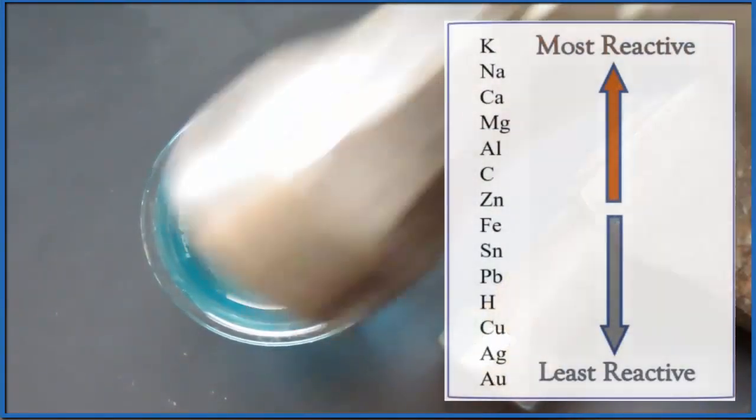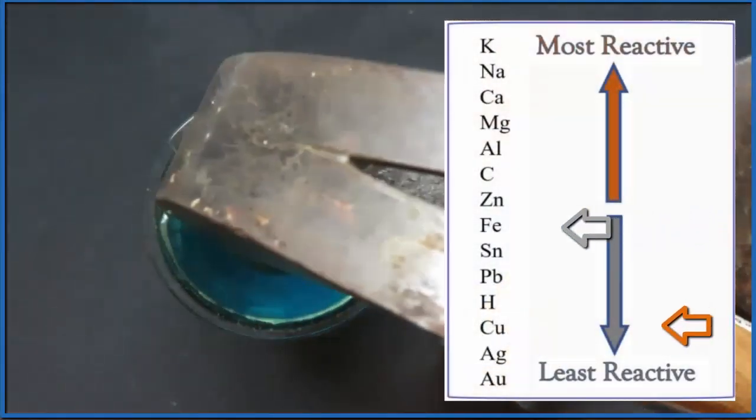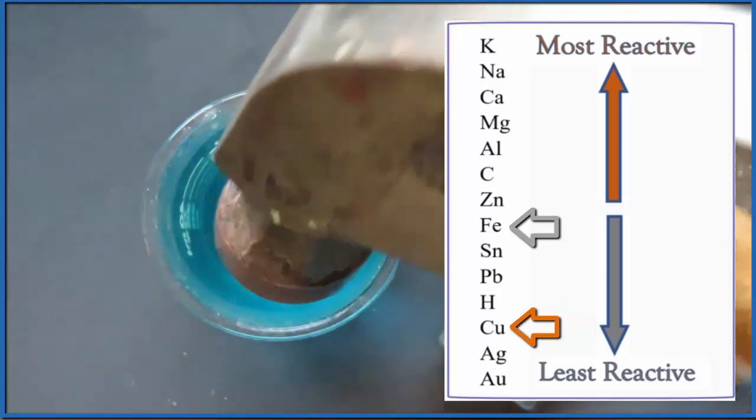All of this makes sense. Iron, Fe, it's higher than copper on the activity series, so it should replace copper.